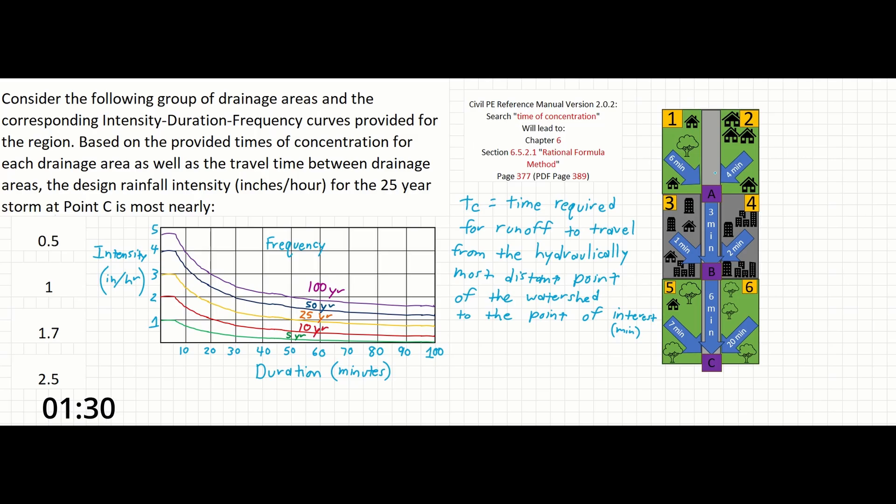We can see that 6 is greater than 4, so let's ignore drainage area 2. For drainage area 1, the overland flow to point A will take 6 minutes, then we will take 3 minutes to go from A to B, and 6 more minutes to go from B to C. This will give us 15 minutes.